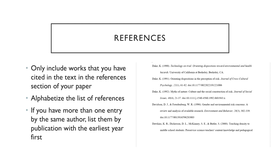If you have more than one entry by the same author, list them by publication with the earliest year first. For example, looking at the D section of a reference list, there are three references by the same author, Dake K., and they are all listed by publication with the earliest year first: 1990, then 1991, then 1992.